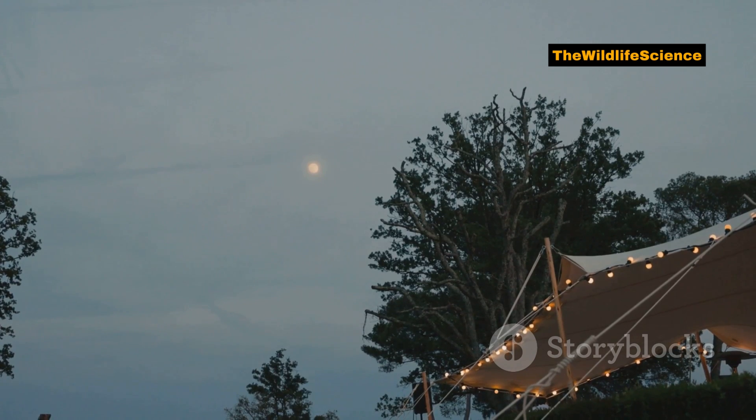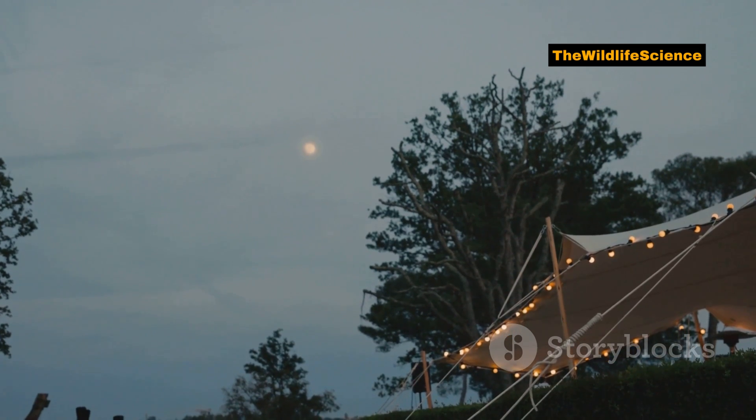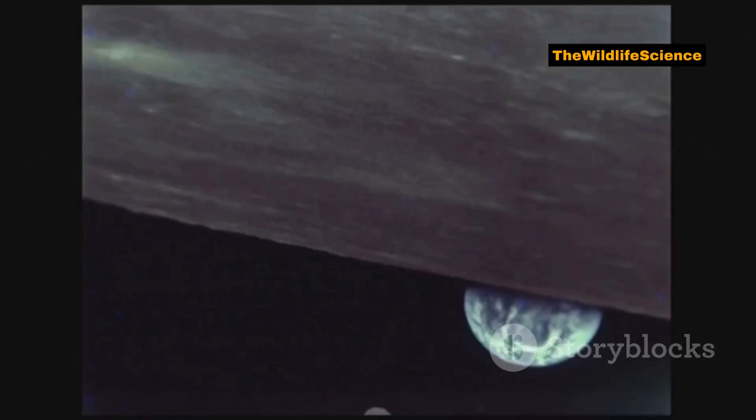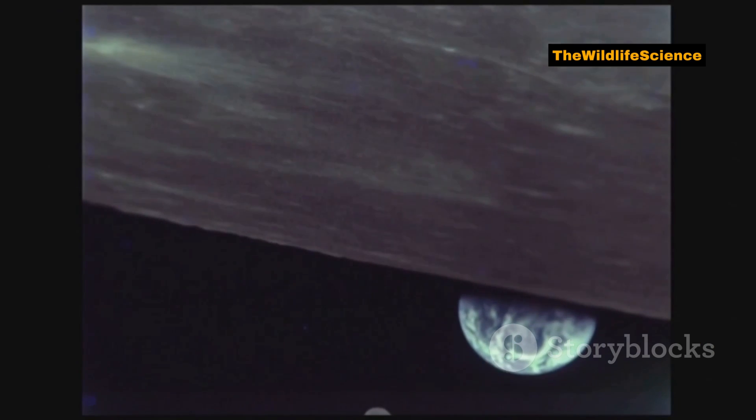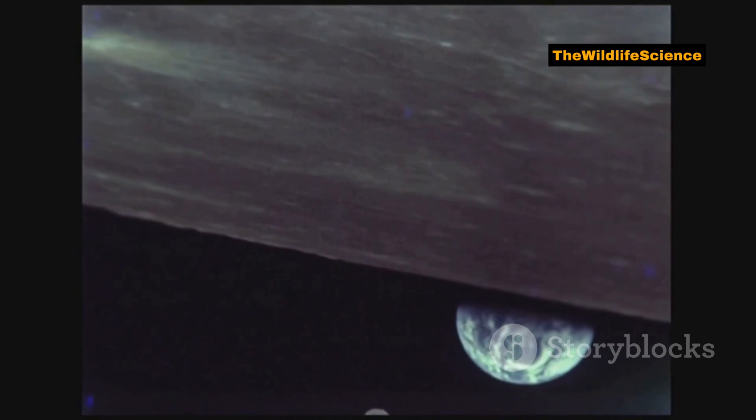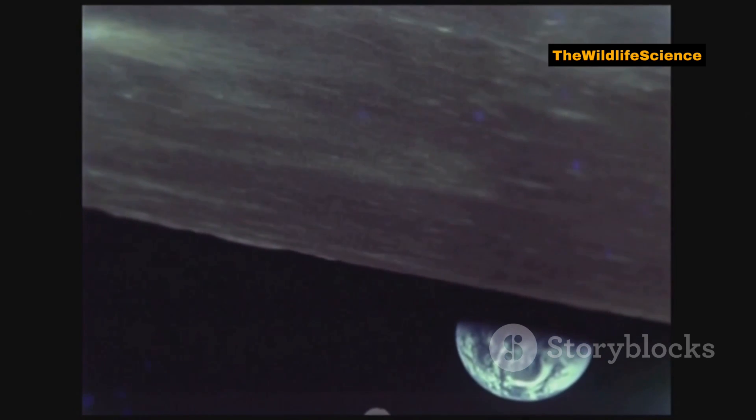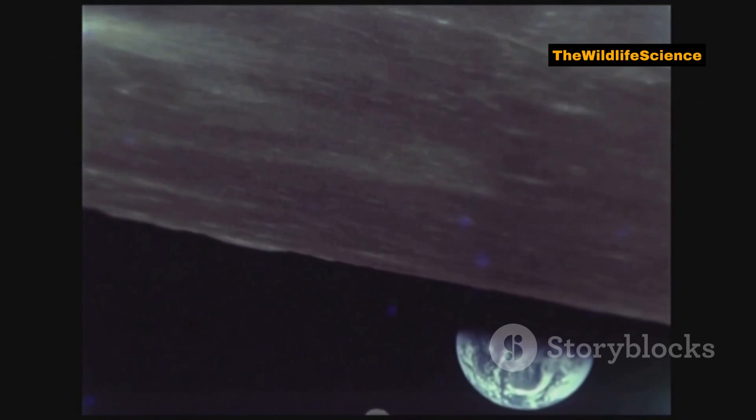So, the next time you gaze up at the night sky, remember this. The glowing moon you see isn't alone. Somewhere out there, far beyond your sight, another smaller companion is orbiting alongside us. Keeping Earth company on its endless journey around the sun.